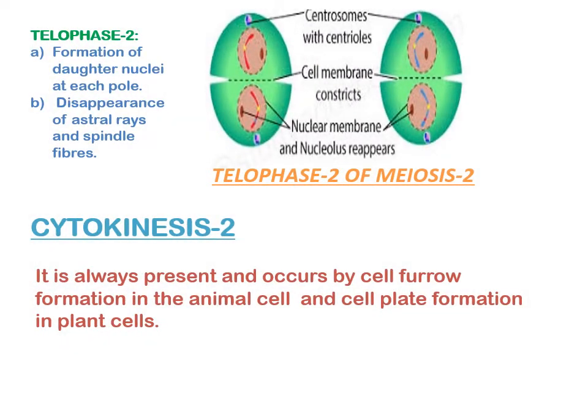Telophase 2 is always present and involves changes opposite to those of prophase 2. A daughter nucleus forms at each pole due to appearance of nuclear membrane from endoplasmic reticulum and nucleoli from SAT chromosomes. There is disappearance of astral rays and spindle fibers. Cytokinesis 2 is also always present and occurs by cell furrow formation in animal cells and cell plate formation in plant cells.